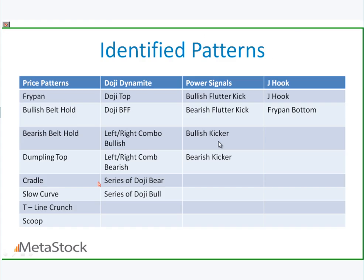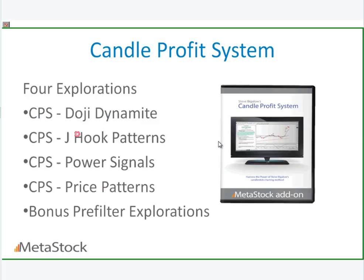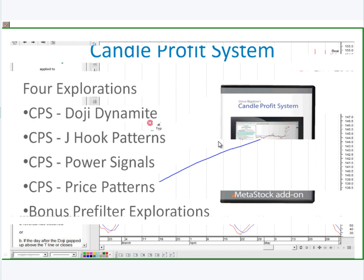I normally don't talk about this for very long, so I'm going into a little bit more detail — hopefully it's not too boring for you. With the product itself, for explorations you get the Doji Dynamite, the J-Hook patterns, the Power Signals, the Price Patterns. And we're going to throw in as a bonus today those pre-filtered explorations — they're a little bit of a separate download, so we'll send a link to you on how to grab those.